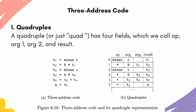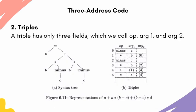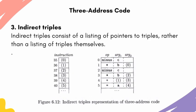In three-address code, we have three types of representations: quadruples, triples, and indirect triples. Quadruples have four fields: operator, argument one, argument two, and result. Triples have three fields: operator, argument one, and argument two (no separate result field). Indirect triples list entire triples using a list of pointers to the triples.